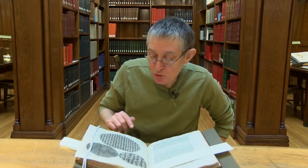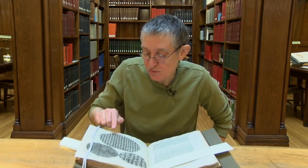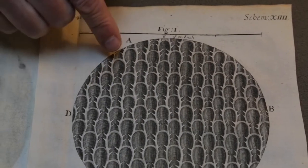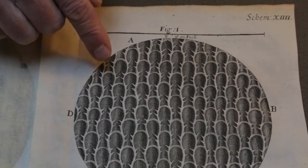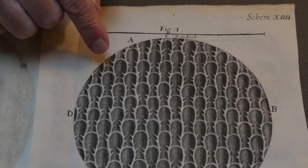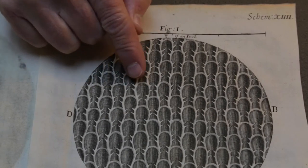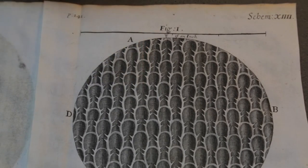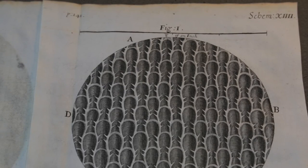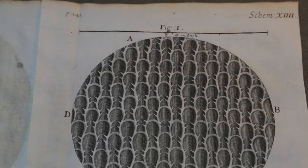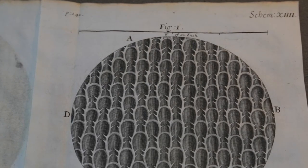Here we see a drawing of the surface of a rosemary leaf with its unexpected tiny little barbs — something you can only see with a microscope. You wouldn't expect to see those when you just feel the surface of a rosemary leaf. With the microscope you can see these features that are invisible to the naked eye.